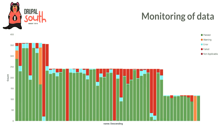Here we have an example of about two weeks' worth of audits on the platform. Here's what the managers would be seeing. On the left we have our Drupal 7 and 8 audit results, and on the right, Drupal 8. It's actually a good example of comparatively how many Drupal 7 sites there are versus Drupal 8 at the moment.